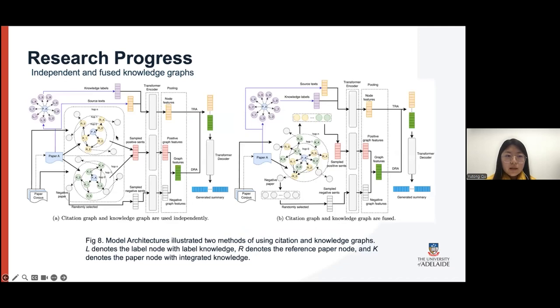As for the model architecture, we proposed two types of model architectures regarding the use of graphs, and they are illustrated in this figure. The left one is about using the citation graph and chemical knowledge graph independently and separately. And the right one is about using those graphs together, which means we merge those two types of graphs into one graph, and we use the whole graph to select positive samples and contrastive learning.